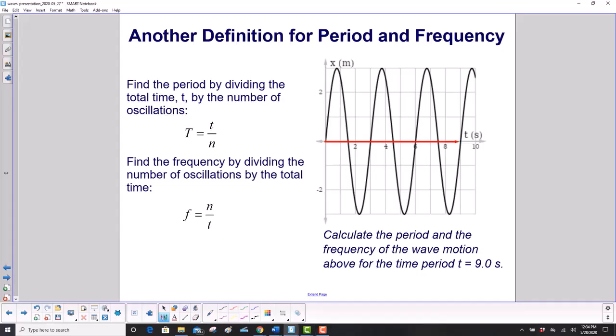Find the period by dividing the total time it takes, t, by the number of oscillations it makes in that time period. So you can see now the relationship between capital T for period, which the units are seconds, and little t for how much time you've been oscillating, which is also seconds. Then find the frequency by dividing the number of oscillations by the total time.